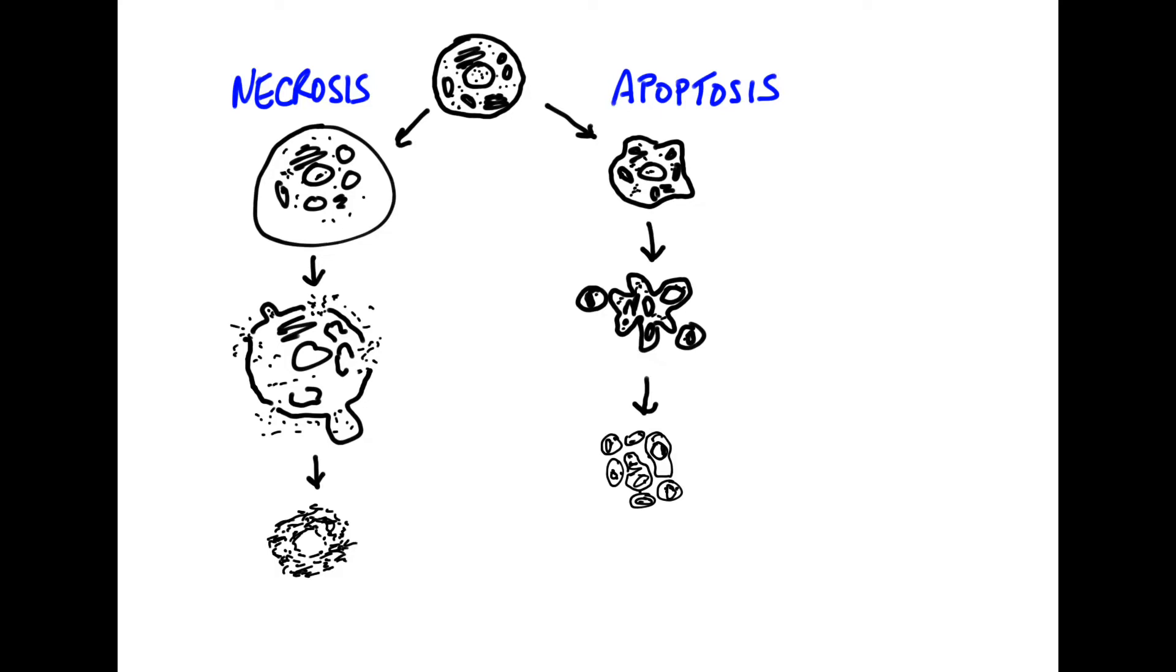One pathway, necrosis, is associated more with accidental death, trauma, or in some cases cell starvation. What happens in that case is ultimately lysis of the cells that produces a potentially very serious inflammatory response and is very antisocial as far as the neighbors are concerned.